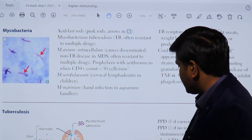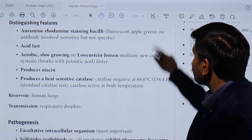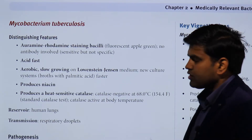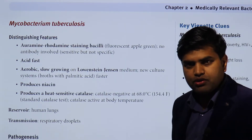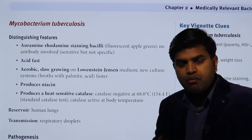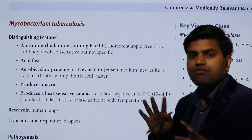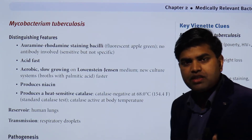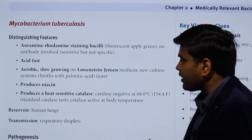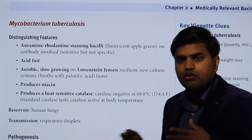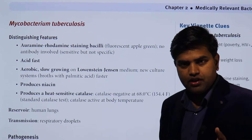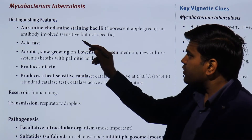Going back to the Kaplan book to discuss Mycobacterium tuberculosis. These are gram-positive aerobic bacteria, but we do not remember them as gram-positive — we remember them as acid-fast bacilli. They are acid-fast because they can resist even high concentrations of sulfuric acid (H2SO4). Even after decolorizing with acid, they do not lose their color — they resist the acid, hence they are called acid-fast bacilli.